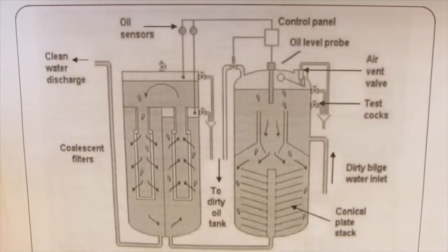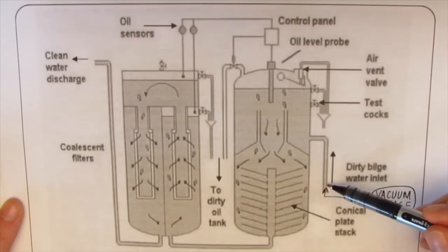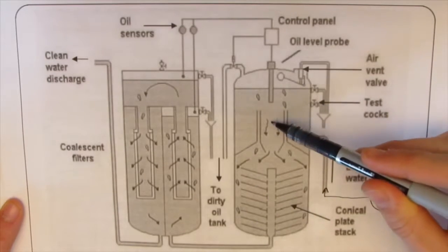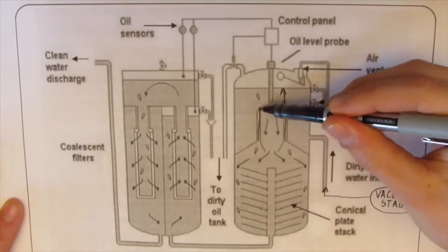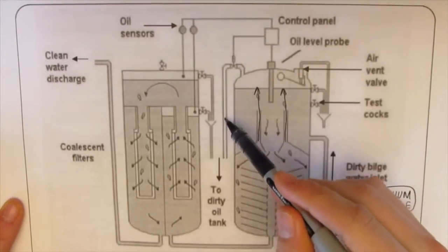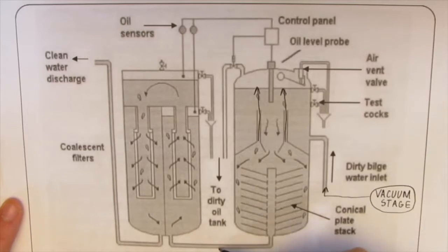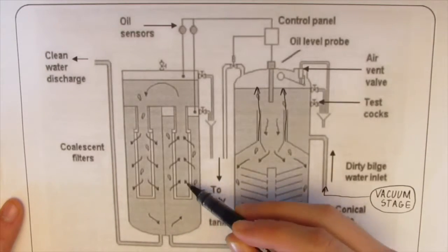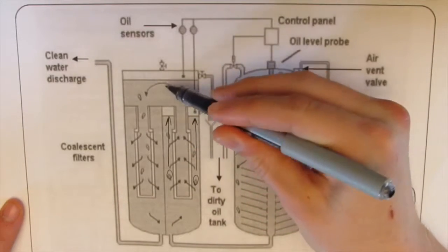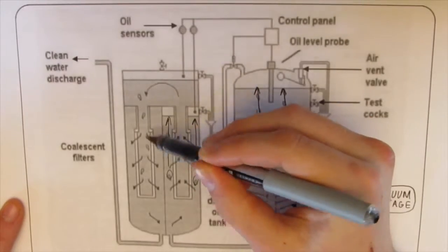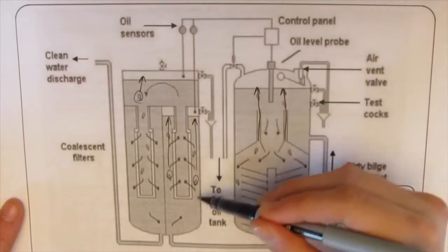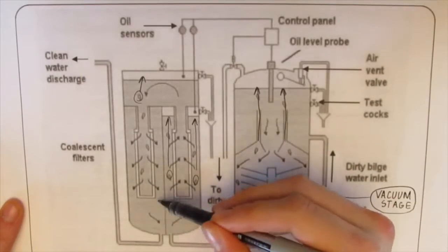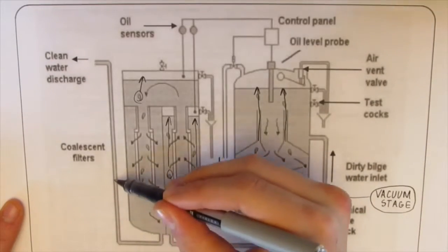As our hand model does his Vanna White impression, we see the oily water flowing from the vacuum stage into the first filtration stage, where most of the oil collects at the top of the tank to be siphoned off to the dirty oil collecting tank. The slightly less oily water then flows into the second filtration stage, where the remainder of the oil is separated out and sent to the dirty oil tank. The clean water will proceed unperturbed.